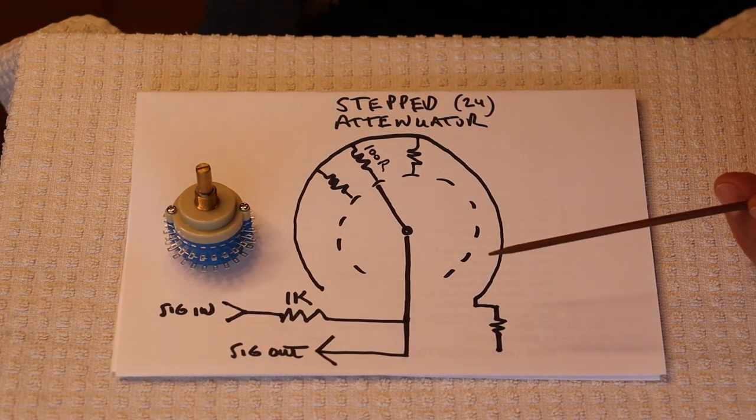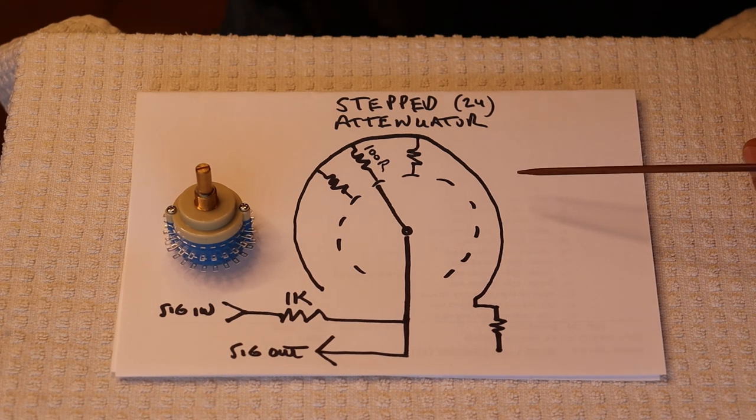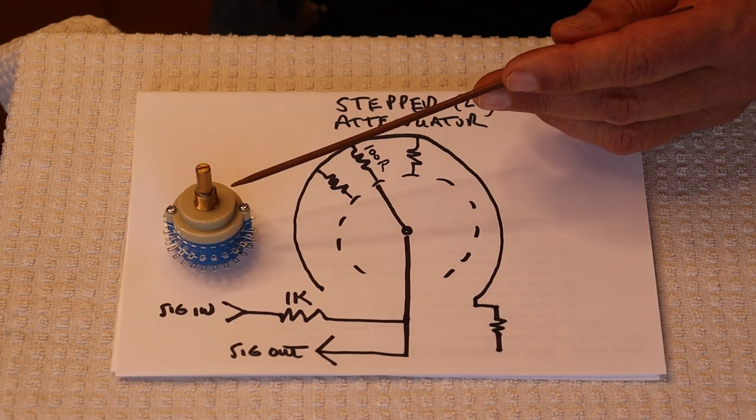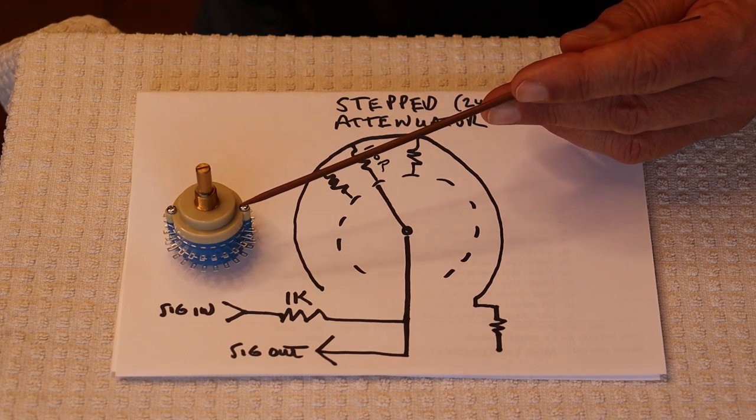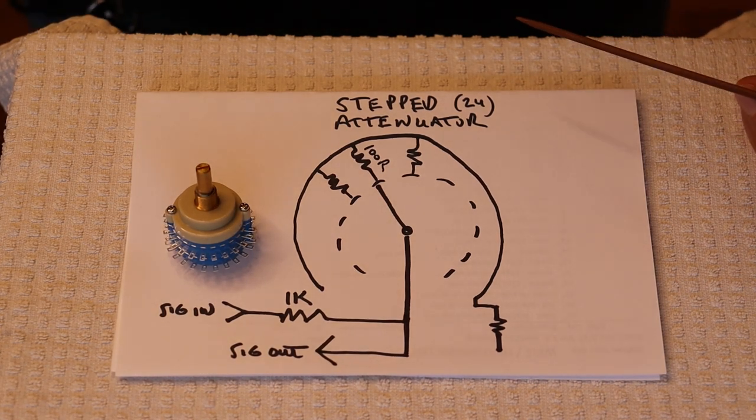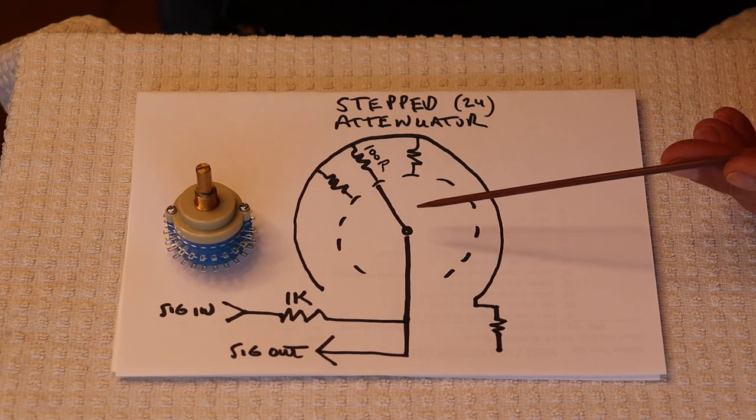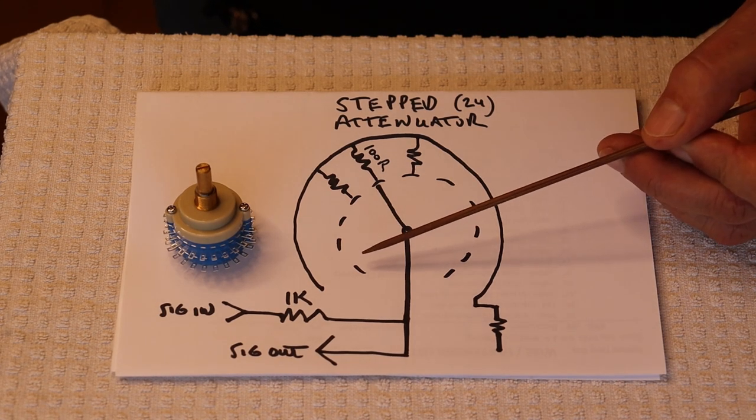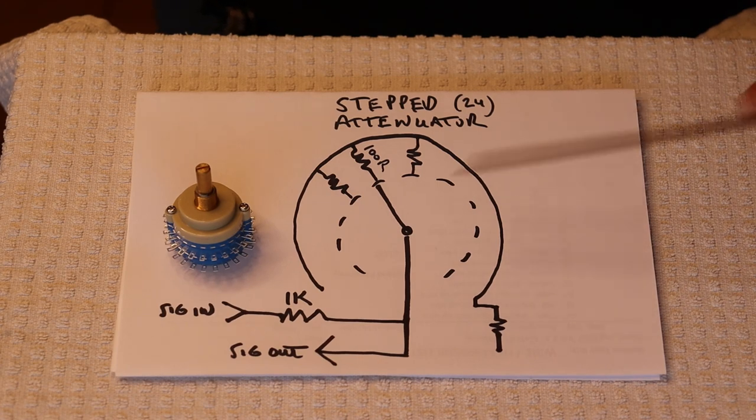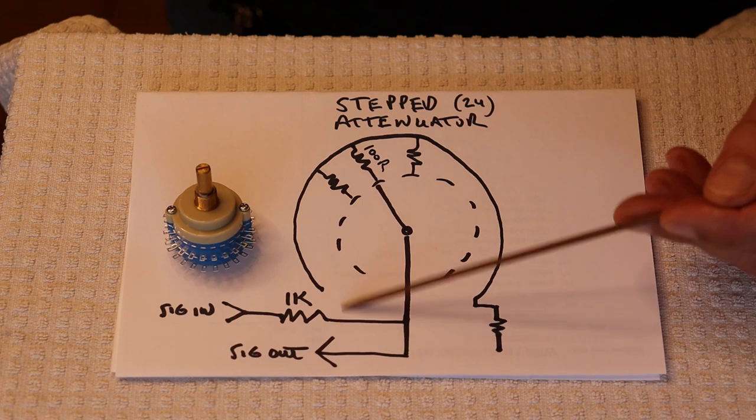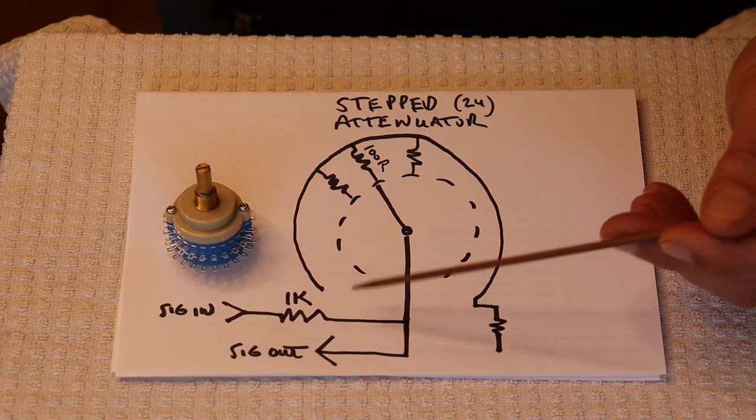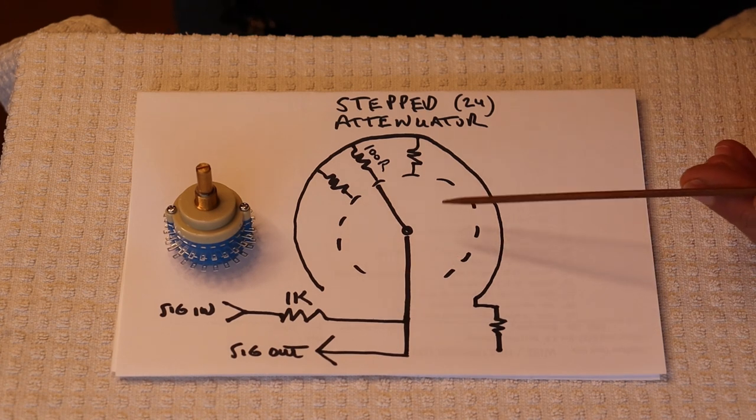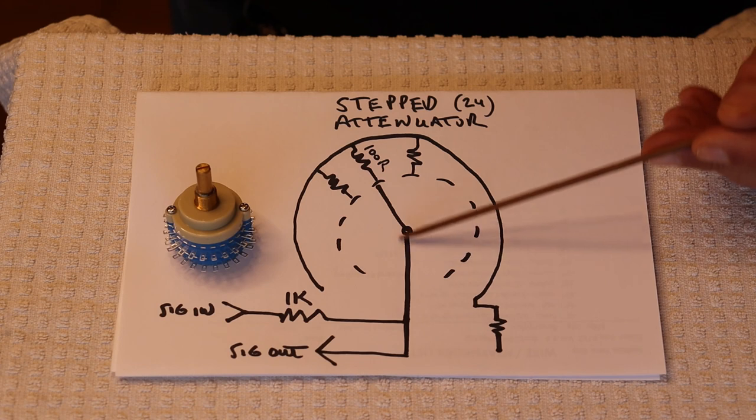The way a stepped attenuator works is you have switches, and we've got - this is a 24-stepped attenuator and it's a stereo stepped attenuator, so it's 24 times 2, so there's 48 contact points, plus the wiper, so there's a pair of wipers, so that makes for 50 contact points. So it gets pretty busy, but the interesting thing is each and every one of these contact points does the same thing.